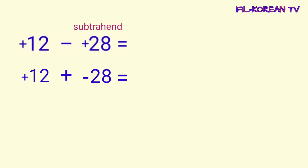Ia-apply natin ang rules sa pag-add ng integers na magkaiba ang signs. Kapag magkaiba yung signs nang ia-add natin, ang gagawin natin, i-ignore natin ang signs — ibig sabihin, huwag nating pansinin ang signs. Magfocus lamang tayo sa numbers. At ang maliit na number ay i-minus natin sa mataas na number.